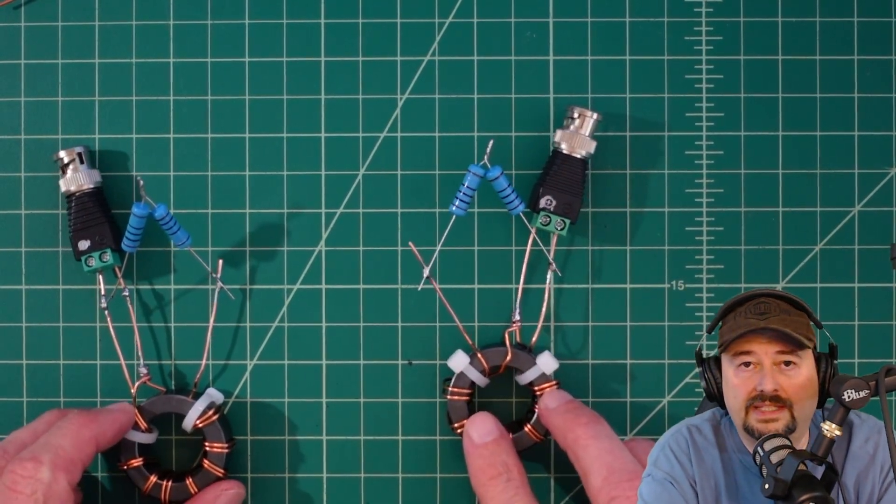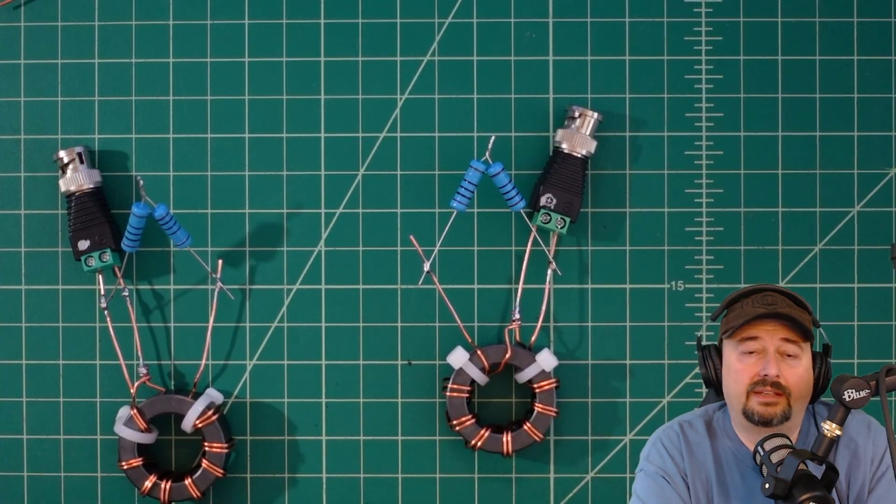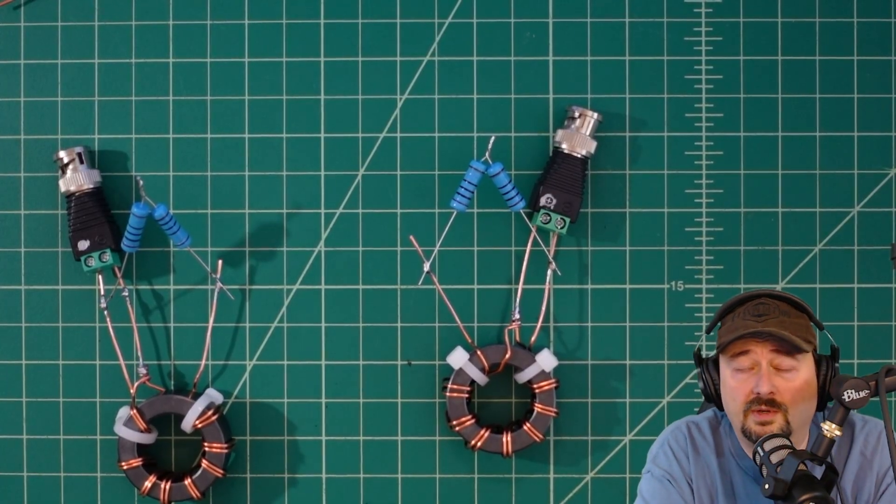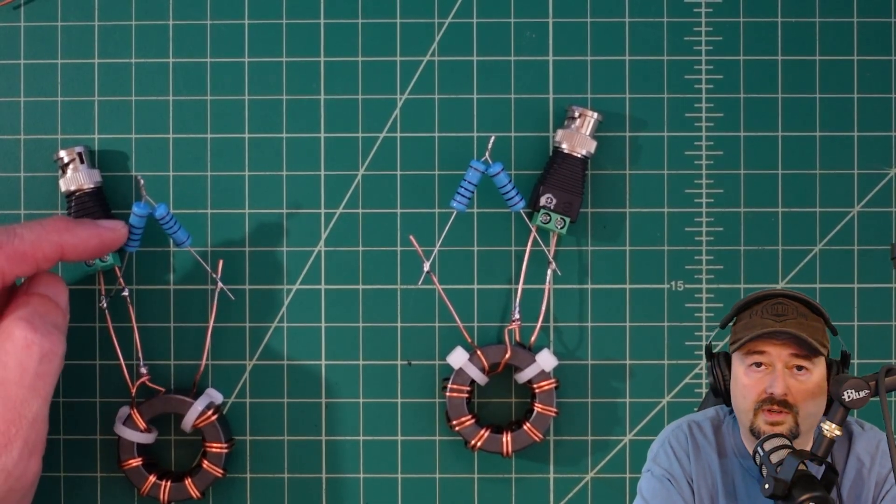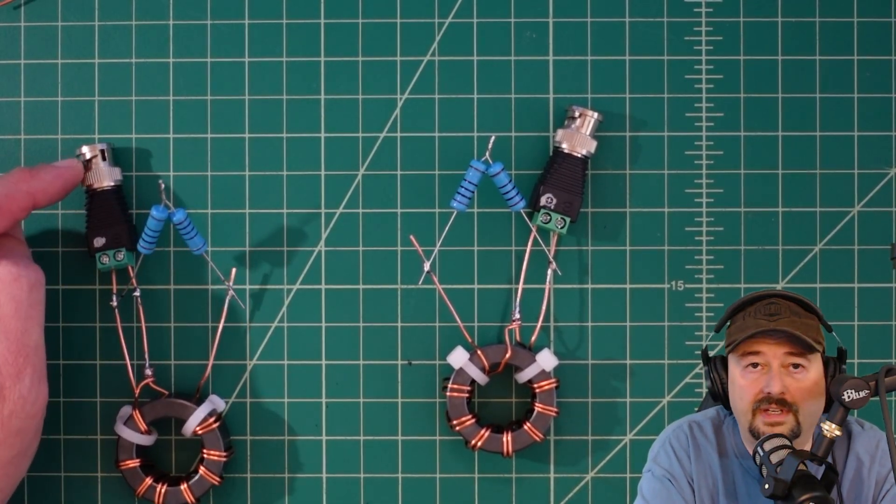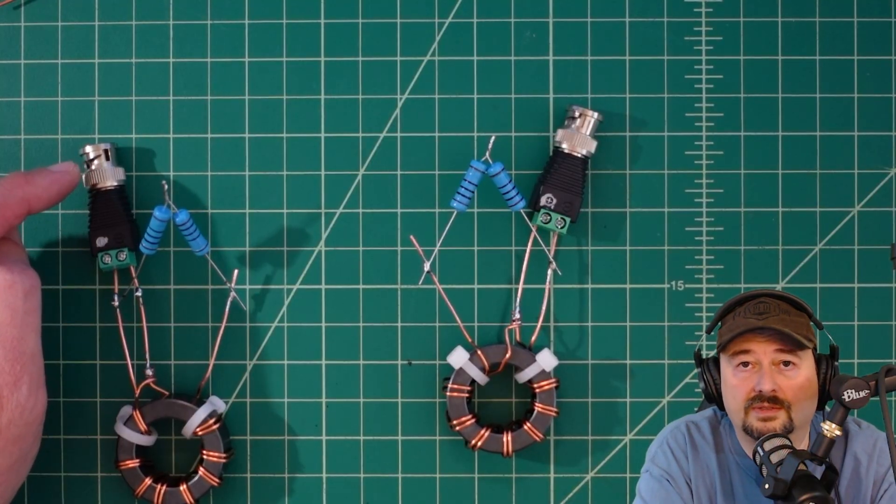What I want to do now is connect these up to a nanoVNA. Then I'm going to show you on the computer what the impedance transformation looks like from a 200 ohm load to a 50 ohm unbalanced coaxial transmission line.